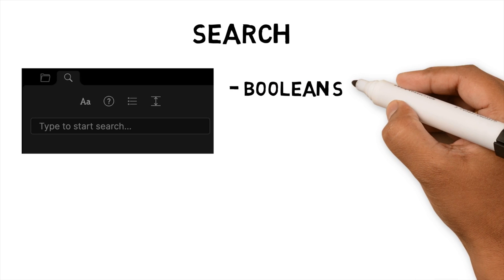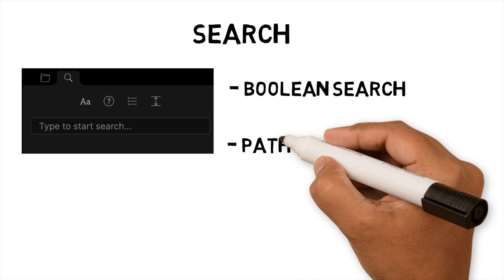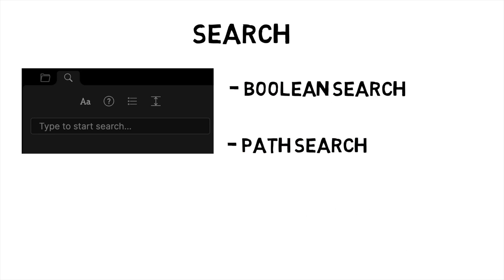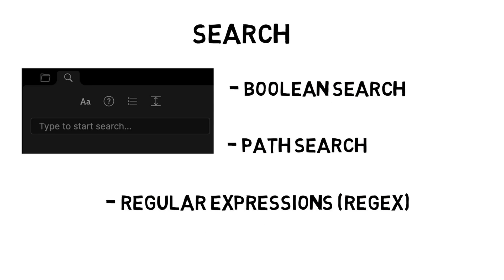Search. Over time the developers have improved Obsidian's search functionality. I use search to discover new notes that can enrich my permanent notes, and I can see myself using this more as the number of source notes increases over time. The most common searches I use are boolean search, path search, and searching with regular expressions. Let's go through these.